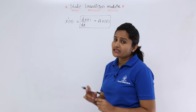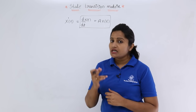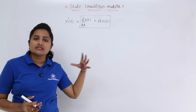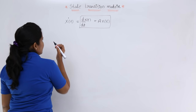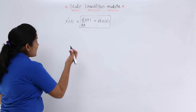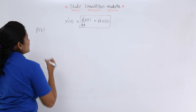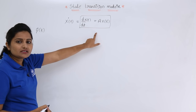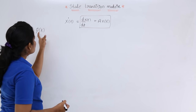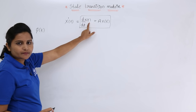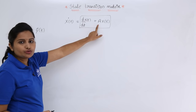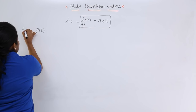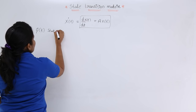A matrix satisfying this linear homogeneous state equation is called the state transition matrix. I am naming the state transition matrix as phi(t). If phi(t) is my state transition matrix, it must satisfy the linear homogeneous state equation. So in place of x(t), I substitute phi(t): d·phi(t)/dt = A·phi(t).